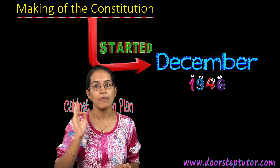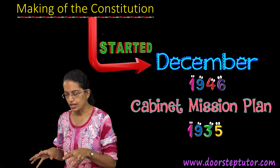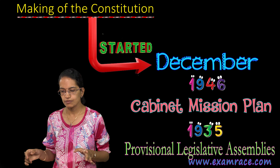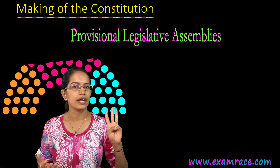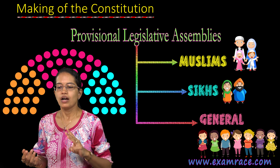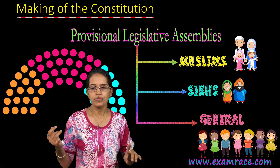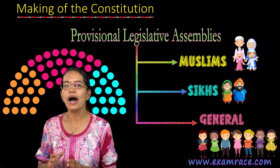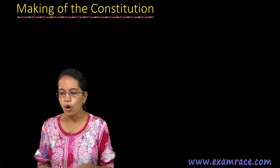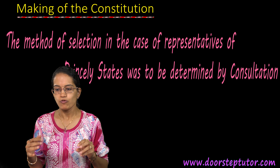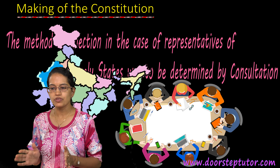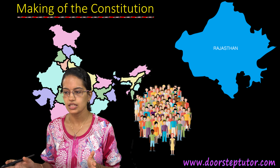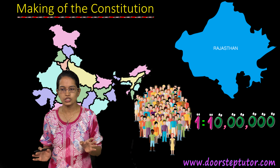All this was laid down under the Cabinet Mission Plan 1935, which had provincial legislative assemblies. The first idea was that seats would be divided under three categories — Muslim, Sikh, and general category — in proportion to the population. Members of each community in the provincial legislative assembly would elect their own representatives by proportional representation through a single transferable vote. The method of selection for princely states was to be determined by consultation. Each province or princely state was allocated seats in proportion to the population, roughly at a ratio of 1 to 10 lakh.